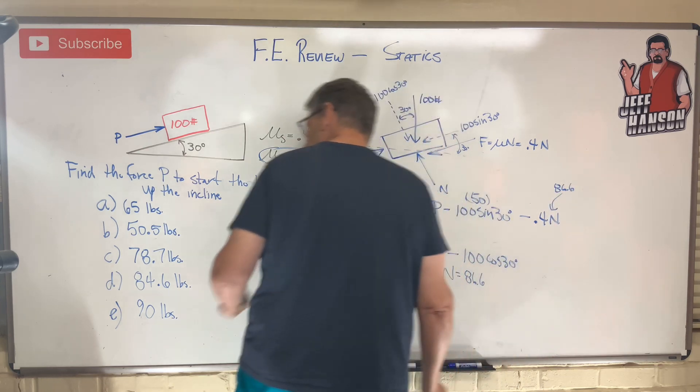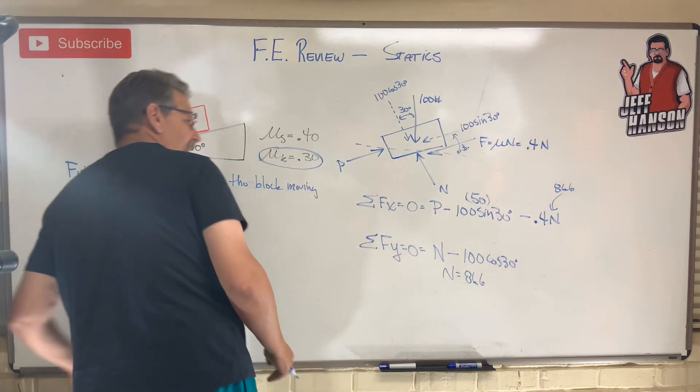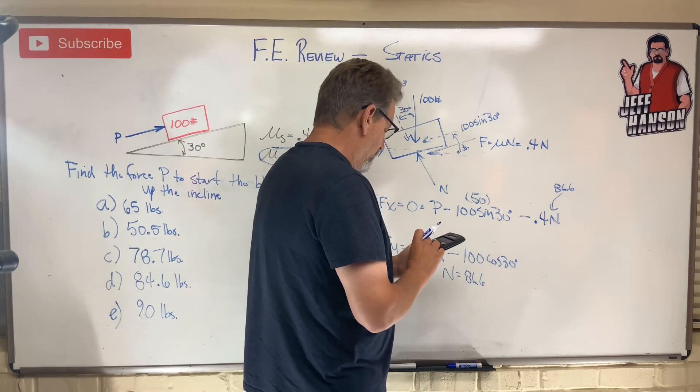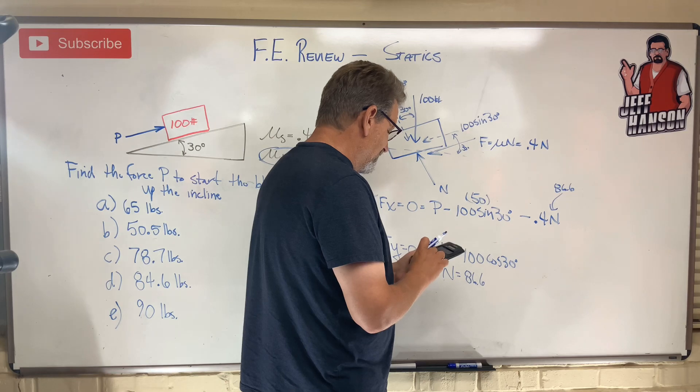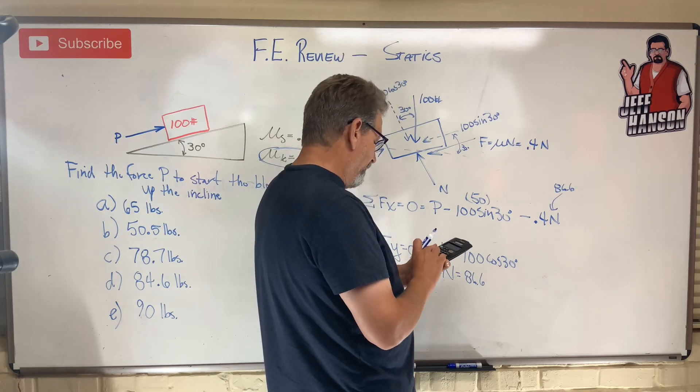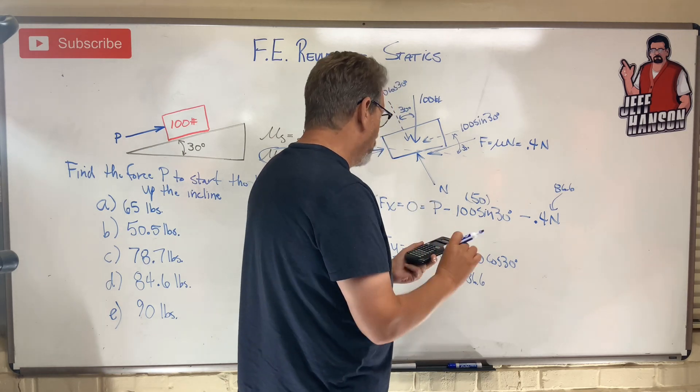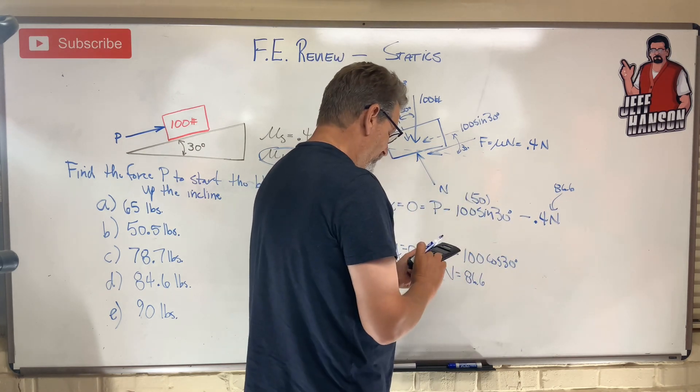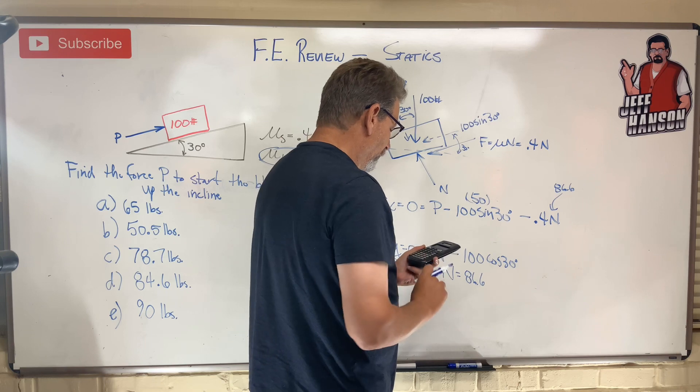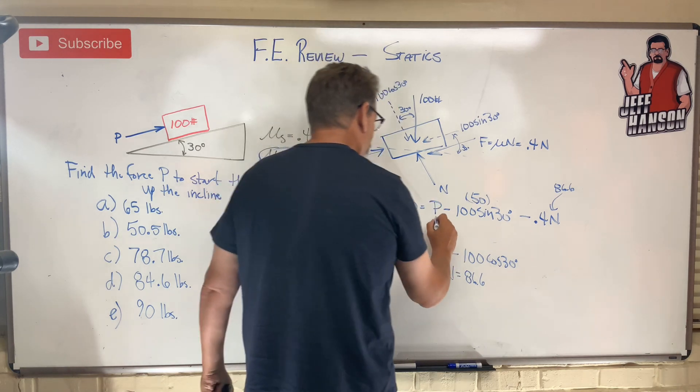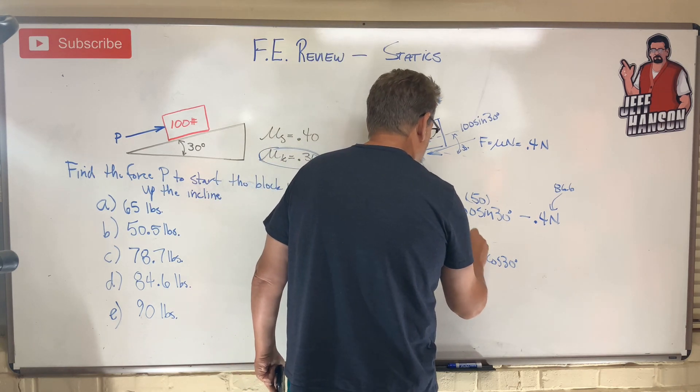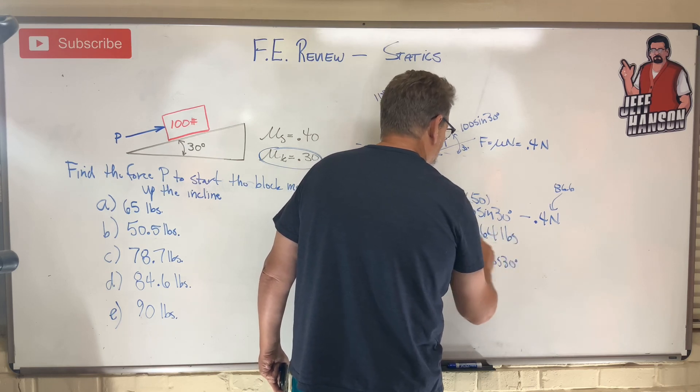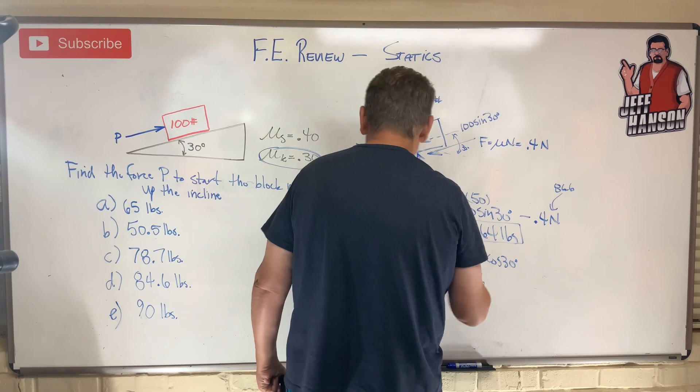I have to do a little bit of calculating here. 86.6 times 0.4 equals 34.64. Move that to the other side, add 50 to it: plus 50 equals 84.64. So P equals 84.64 lbs. Is that one of our answers?